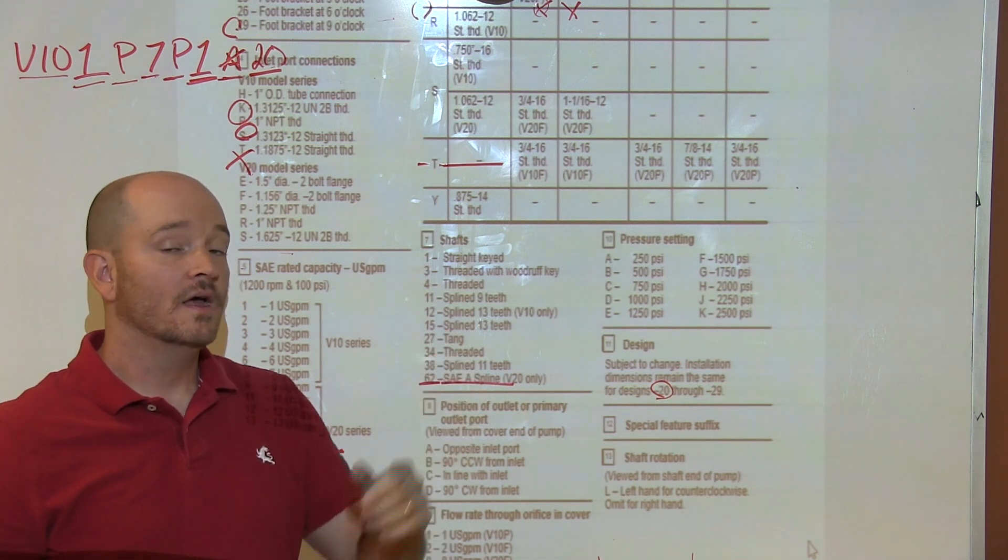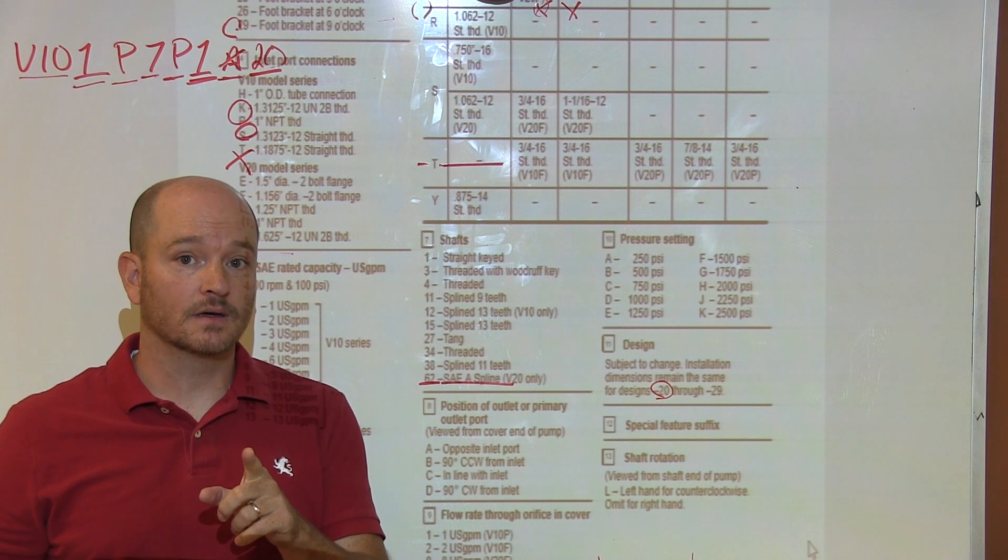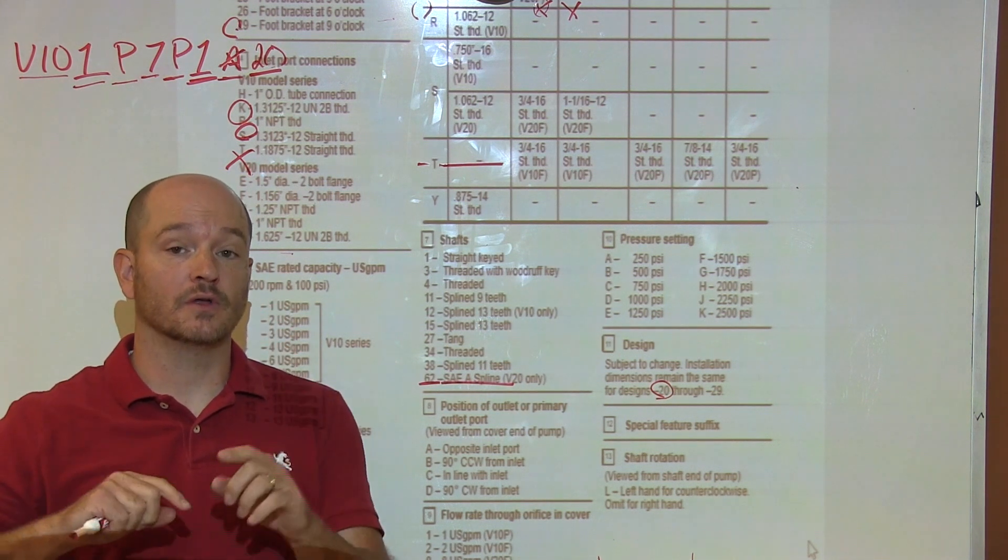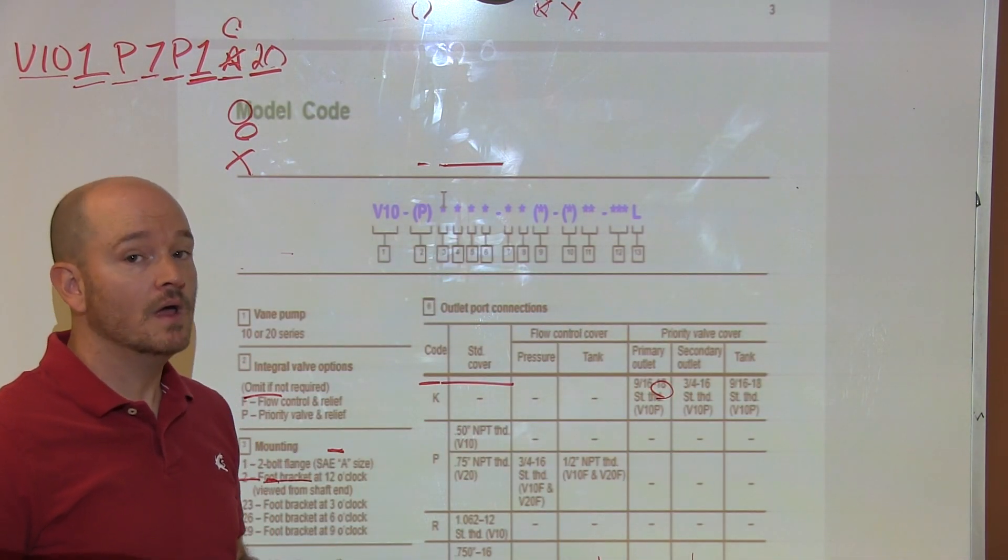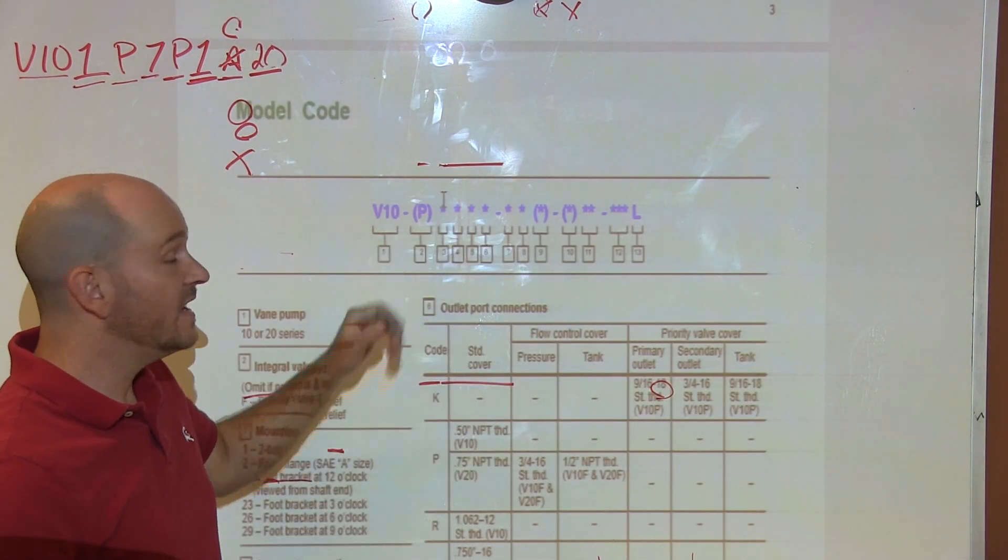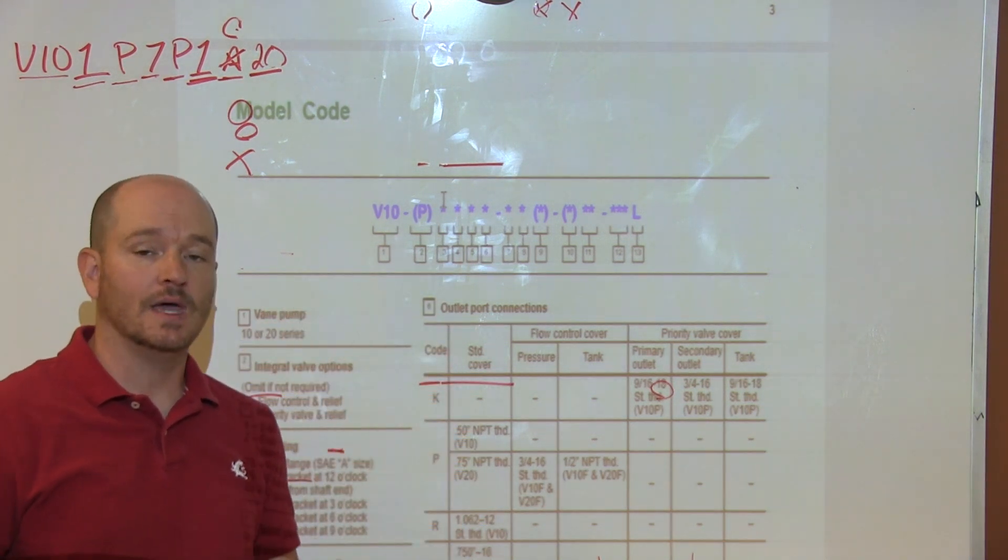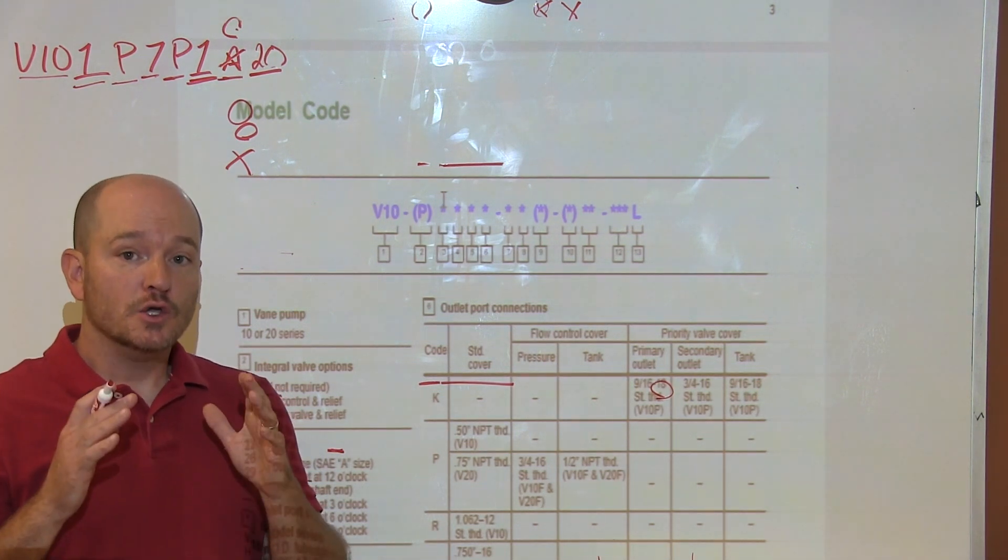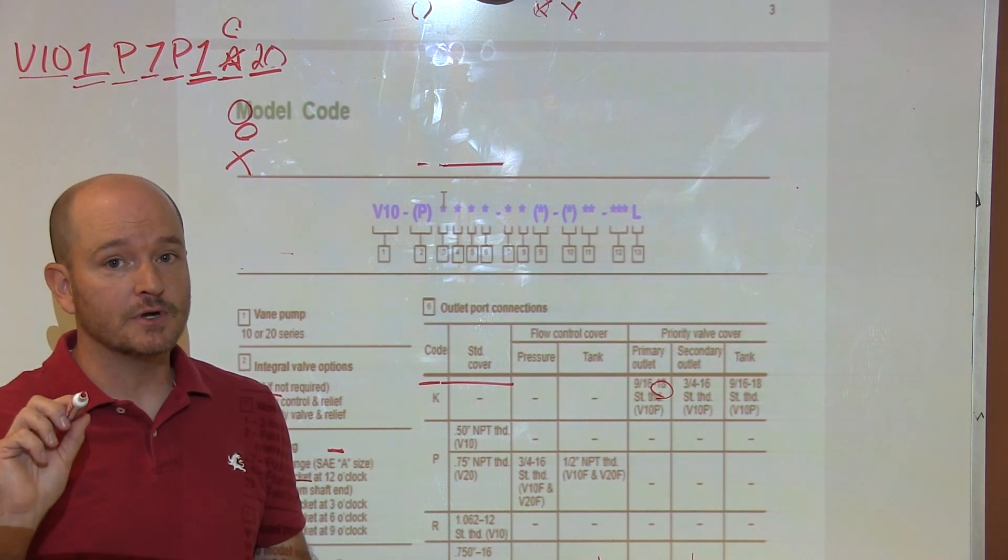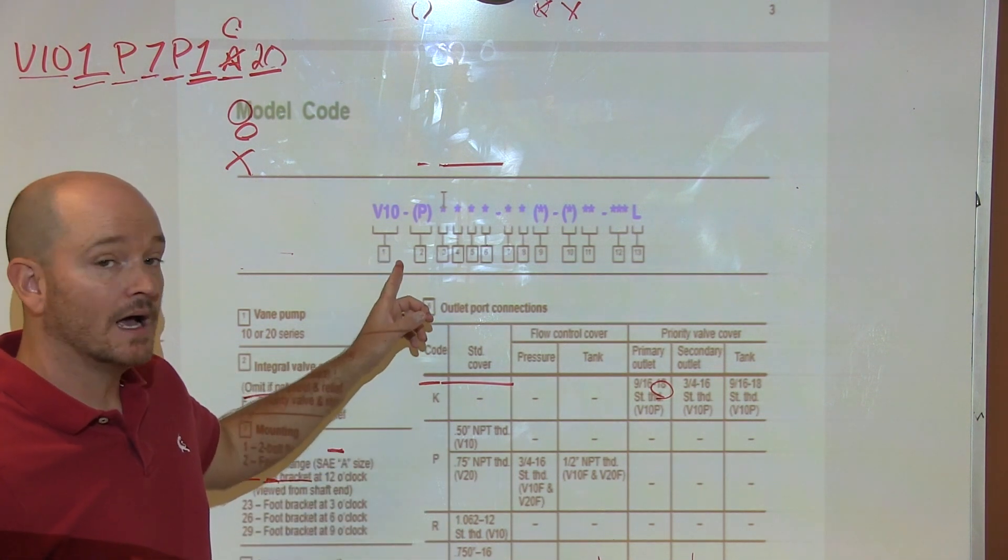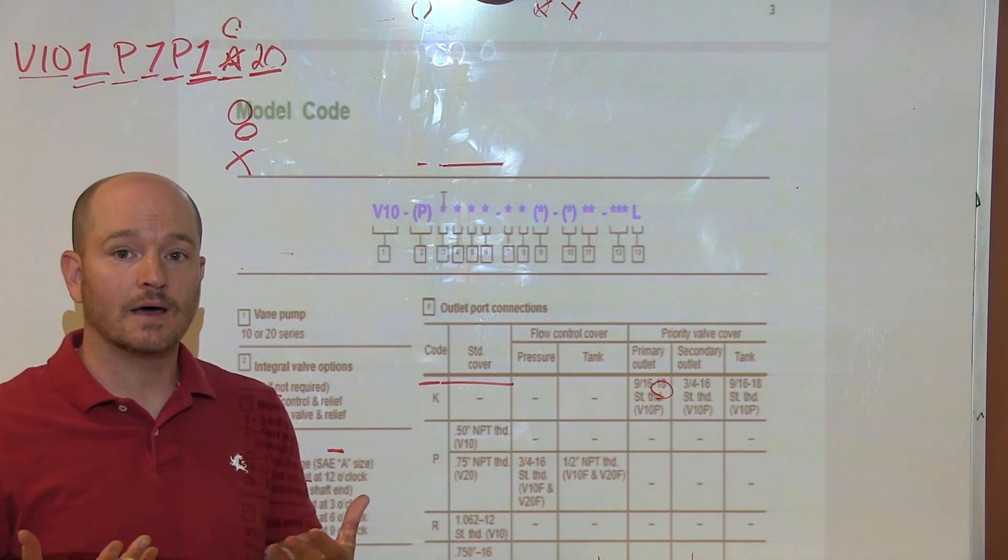It's manufacturer specific. There's no standard for model numbers, although they all tend to use this type of code here to break these down. By no means does the V always mean vane, and things like that. What does the 10 stand for? They're not always going to give you gallons per minute, they're not always going to give you displacement. Experience and a basic understanding of hydraulic pumps is absolutely required to break down the characteristics of a pump when you decode a model number using its manual.